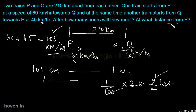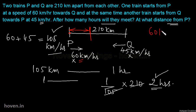Now the question is: at what distance from P will they meet? In 2 hours, the distance covered by train P, with speed 60 km per hour, is speed multiplied by time = 60 multiplied by 2, which gives a distance of 120 km from P.